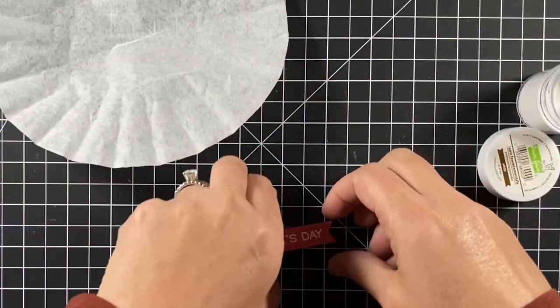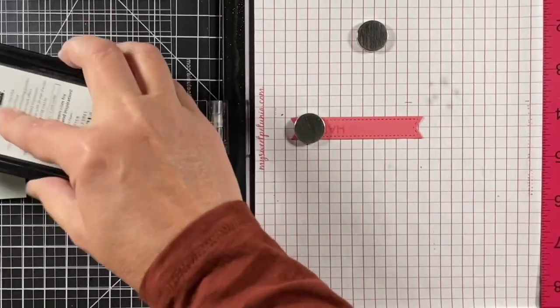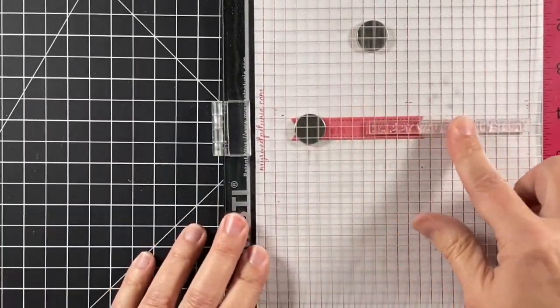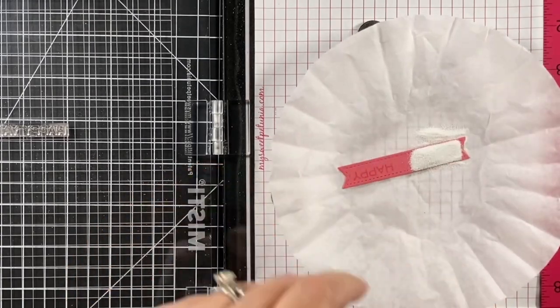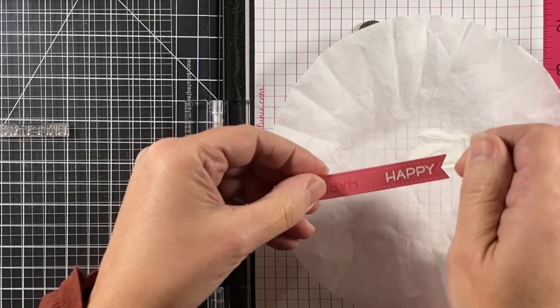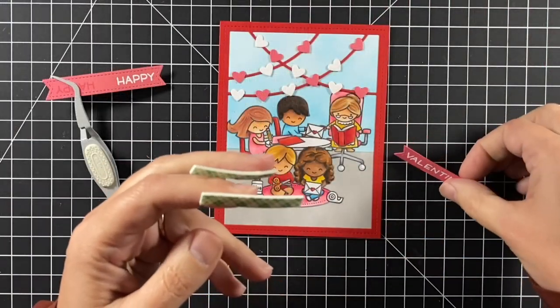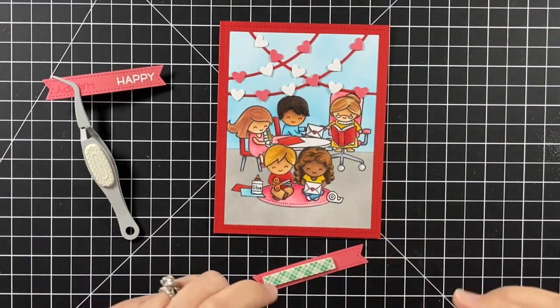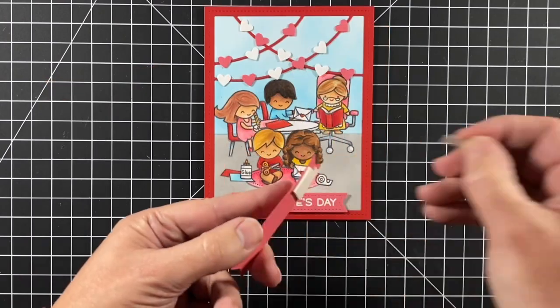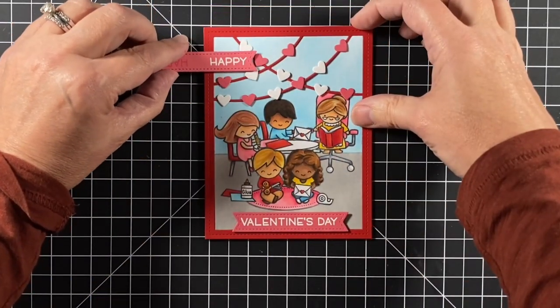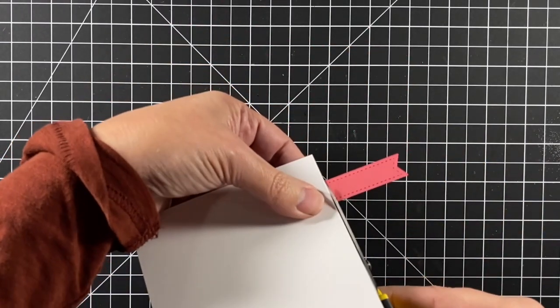I'm going to stamp out the other banner with the word happy. Nice thing with the banner is I can use the other side. I'll add some foam adhesive to the back of both banners, raise them up a little bit, and then adhere those to my card. I'll snip off the part that's hanging off the edge. This card is all set.